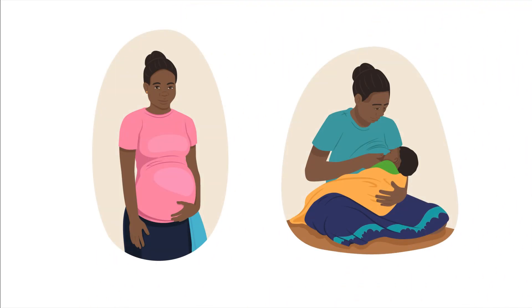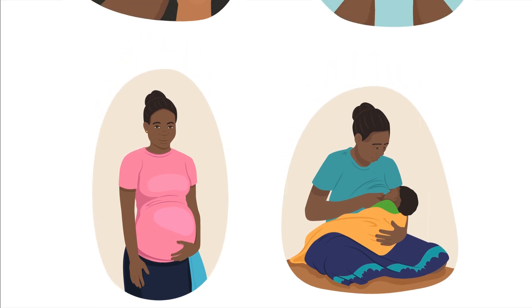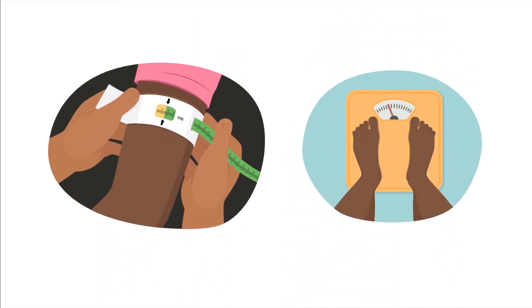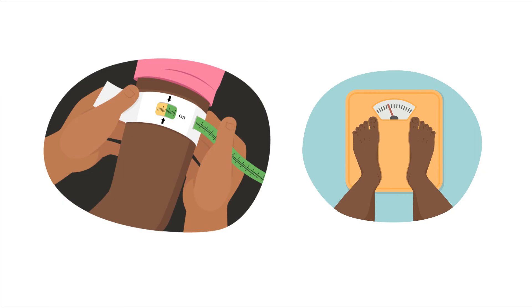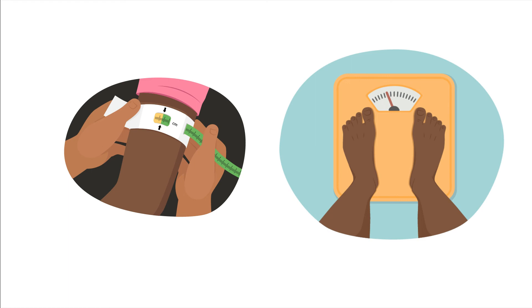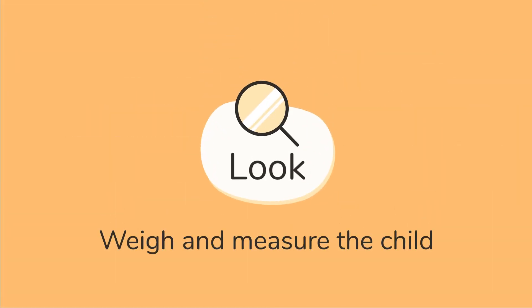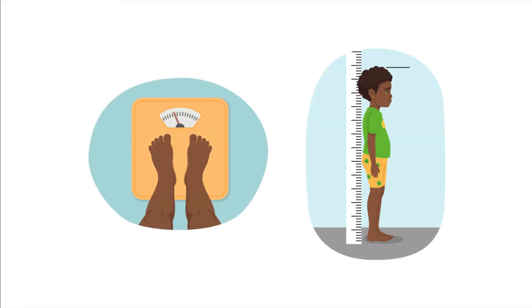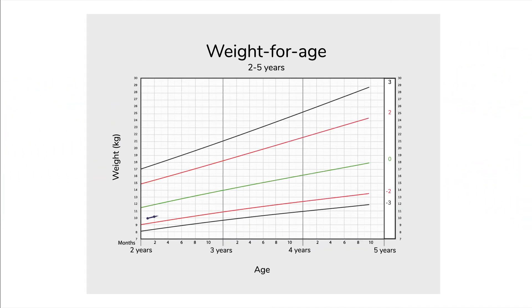It is also important to assess the expecting and lactating mother for malnutrition, as this can affect the growing baby in the womb or during breastfeeding. It is a concern if the mother has less than 23 cm on their MUAC tape measurement and a body mass index of less than 18.5. Weigh and measure the child, checking their weight and height or length measurement over time. Look for poor weight gain and a slowing of growth. If the child's growth curve flattens, drops or crosses a line on their growth chart, this indicates a problem.